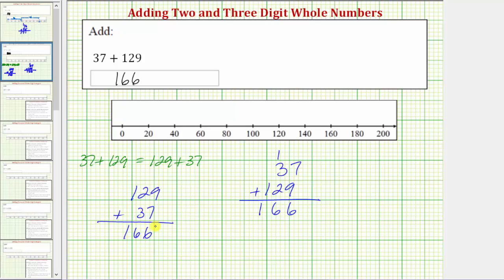And then finally before we go, let's look at the original sum on the number line. So because we begin with thirty-seven, starting at zero, we would go right thirty-seven units to thirty-seven on the number line.